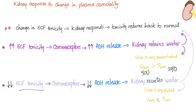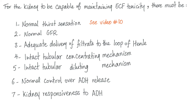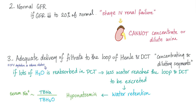On the other hand, if you have low tonicity, you have decreased ADH release. The kidney excretes water and tonicity returns back to normal; the urine is very diluted relative to plasma — say, around 100. For the kidney to do all of this, many conditions must be met: normal thirst sensation, normal GFR, adequate delivery of filtrate to the loop of Henle, intact tubular concentrating mechanisms, intact diluting mechanisms, normal ADH release, and kidney responsiveness to ADH.